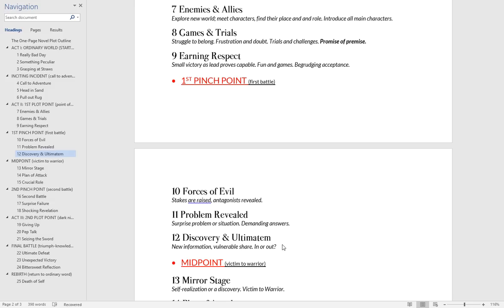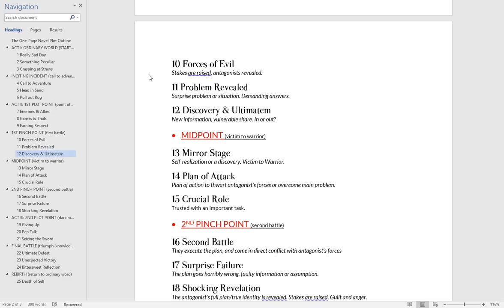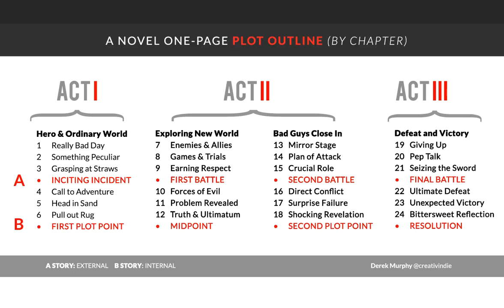This is the shift called the midpoint — they go from victim to warrior. For the first half of the book they've been reactive, learning, mostly passive — not making decisions or taking action, reluctantly getting used to the new world. At the midpoint, they deliberately make a conscious decision to go forward, even though they know the risks and the backstory. They're going to stop being a victim and start being a warrior, which just means they're going to start taking action and being a more active character.